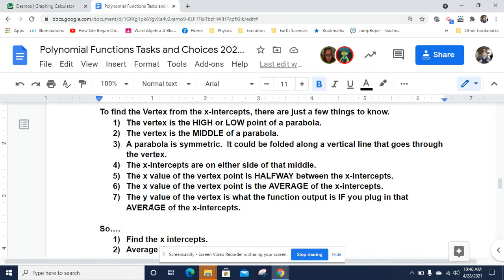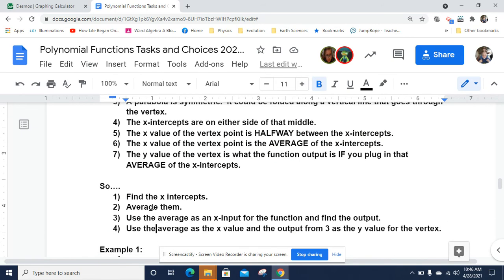So going back here, here are the basic steps. Find the x-intercepts. Average them. Add the x-intercepts together and divide by 2 since there will only be 2 in a quadratic. Use the average as the x input for the function and find the output. So you're replacing x with the average. Then use the average as the x value that you got in number 3 and use the y output from 3 as the y value of the vertex. And that will be the vertex. This average will be x and this output will be y.